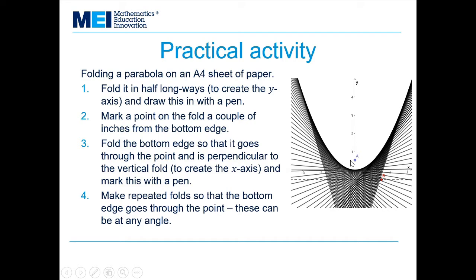Then you're going to fold the bottom edge of the paper so that it goes through that point perpendicularly, and that creates the x-axis. Again, you'll want to draw that on with a pen. Once you've got your axes, you can make repeated folds so that the bottom edge goes through the point, and that can go at any angle. And then that set of lines starts to form this shape of a parabola.